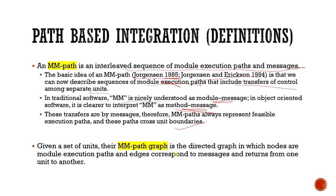Given a set of units, their MM-path graph is the directed graph in which the nodes are module execution paths and edges correspond to messages and returns from one unit to another.